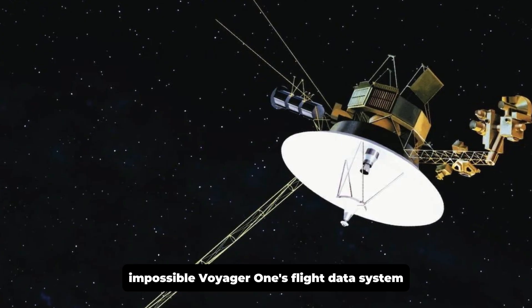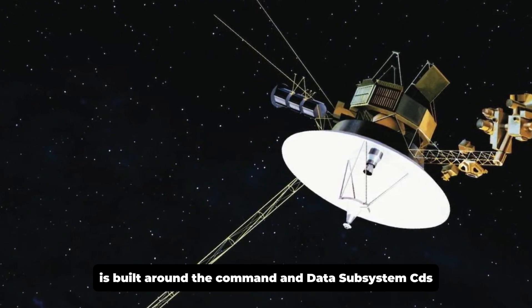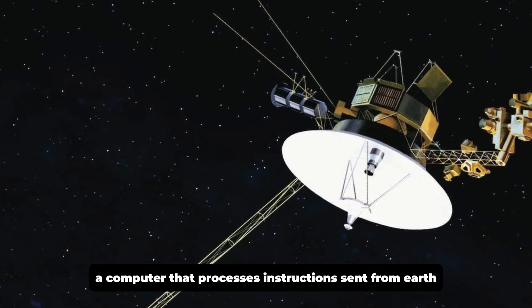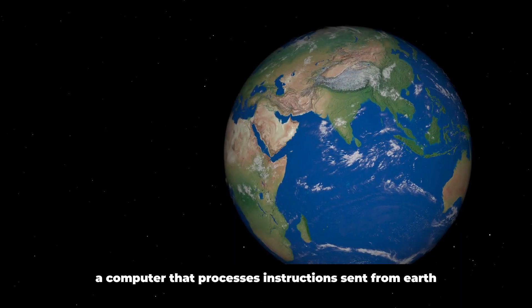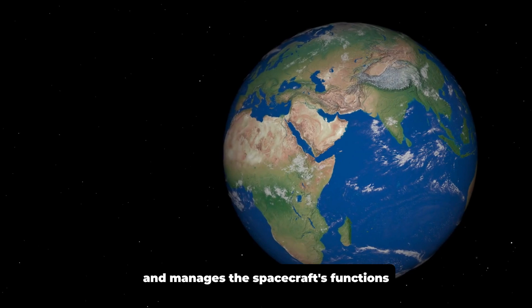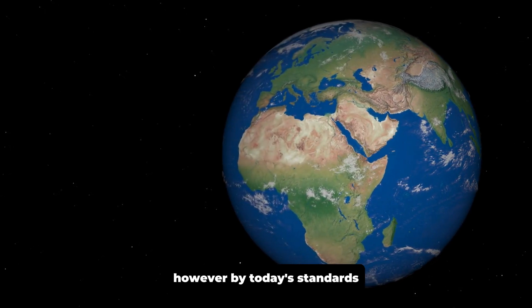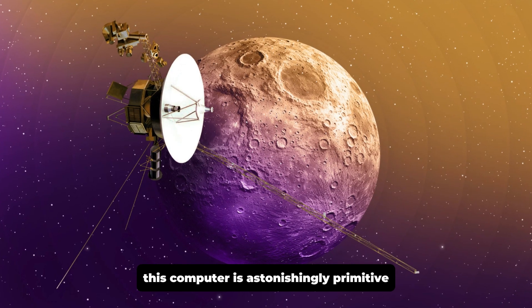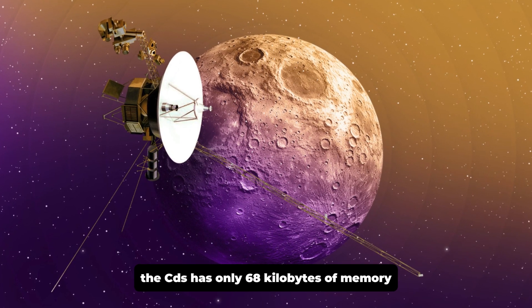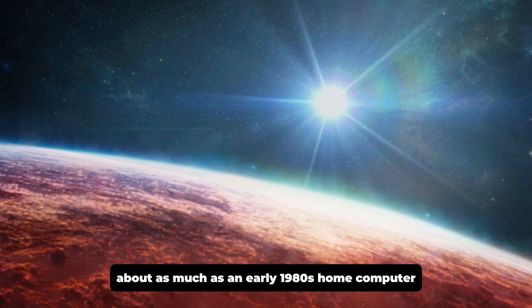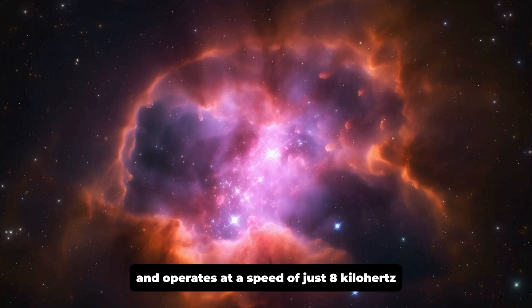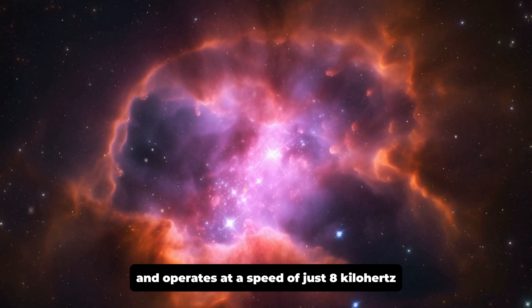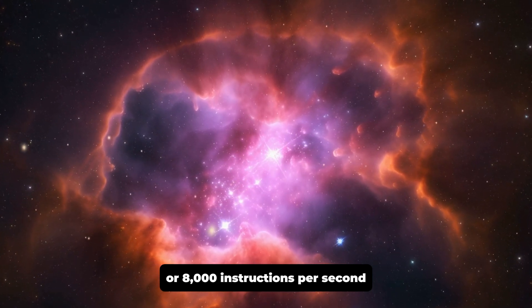Voyager 1's flight data system is built around the Command and Data Subsystem, CDS, a computer that processes instructions sent from Earth and manages the spacecraft's functions. However, by today's standards, this computer is astonishingly primitive. The CDS has only 68 kilobytes of memory, about as much as an early 1980s home computer, and operates at a speed of just 8 kilohertz, or 8,000 instructions per second.